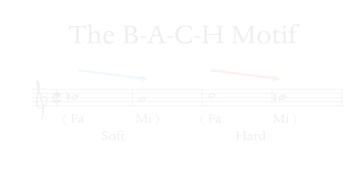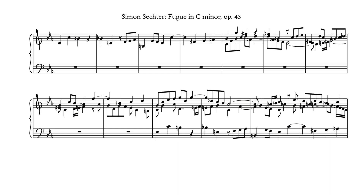Here is another musical cipher, invented by Simon Zechter during that lesson with Schubert mentioned earlier in the video. He gave Schubert this fugue subject as homework — he wanted Schubert to compose a fugue based on notes derived from his own name. In German, the note E-flat is pronounced S, then C-H, and there is no U so he leaves a rest, then B-E, and another rest for the R and T. Unfortunately, Schubert died within nine days of this lesson with Zechter, so he never composed that fugue. Simon Zechter completed the fugue and published it as his Op. 43 in memoriam of Schubert.